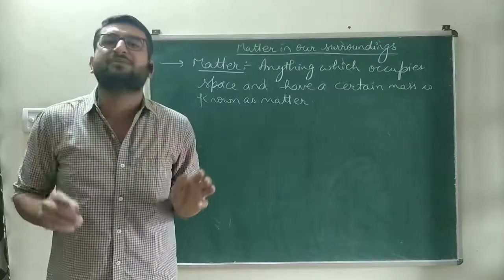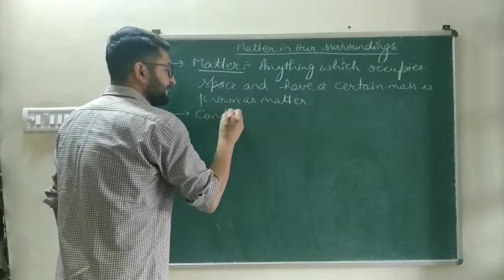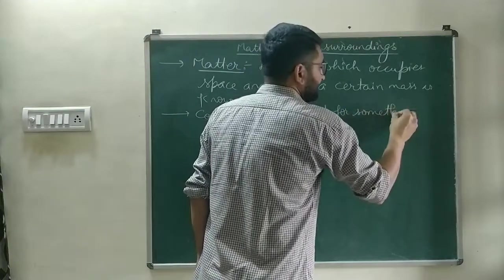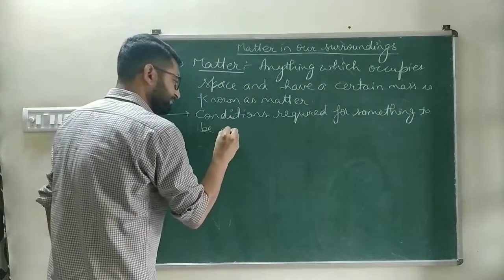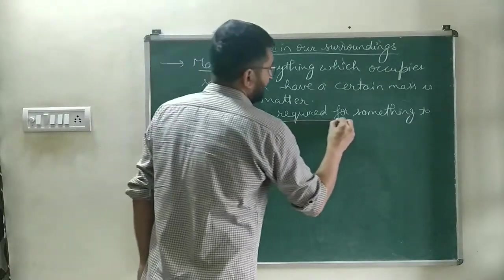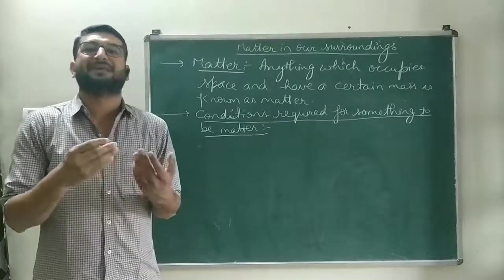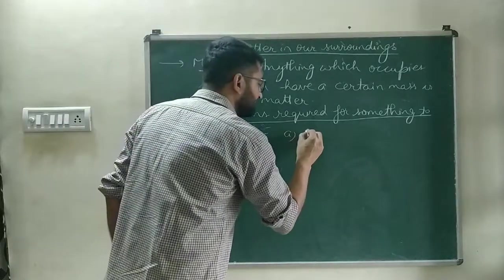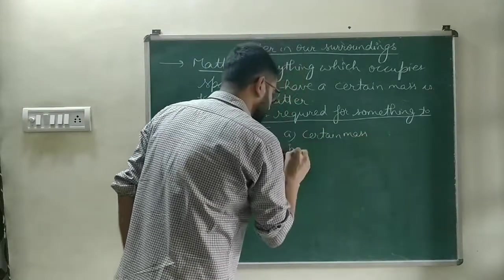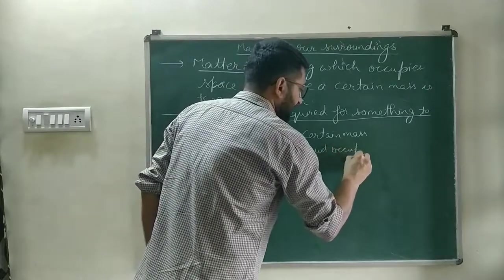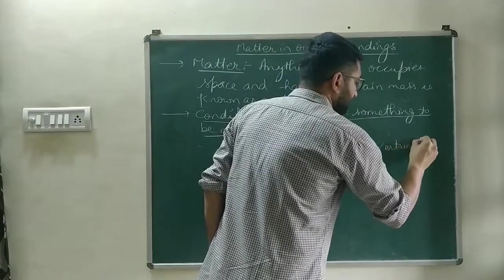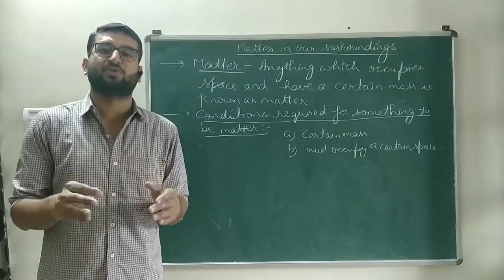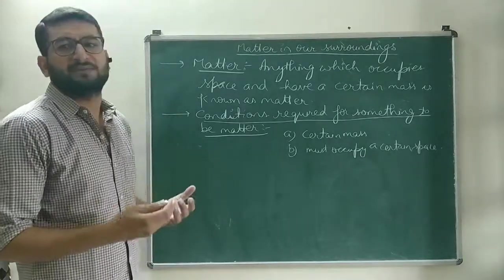These are some common examples about matter. Next, we will discuss the conditions required for something to be matter. There are two conditions required. The first is: it has a certain or fixed mass. And second: it must occupy a certain space. These are the two conditions which must be satisfied for any substance to be included in matter.